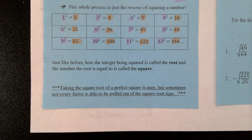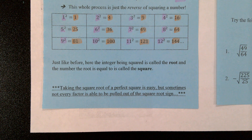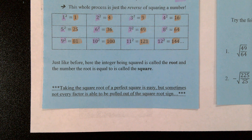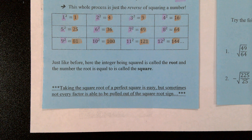Taking the square root of a perfect square is easy because when we see 49, our brain goes 'boom, 7 times 7.' When we see 100, we go 'boom, 10 times 10.' Our brains are used to that by now. Tomorrow we'll look at some square roots that aren't so nice and perfect — some imperfect squares — but we're not going to worry about that today.